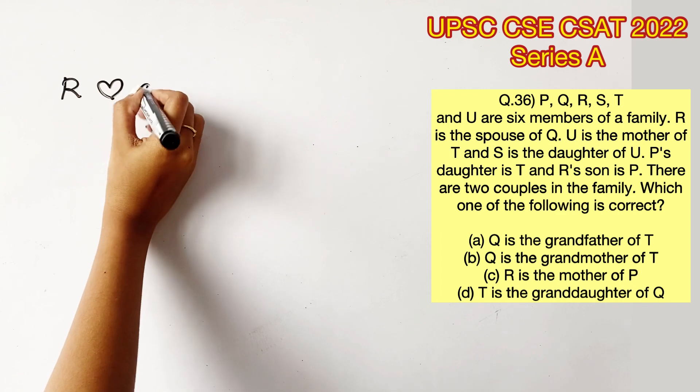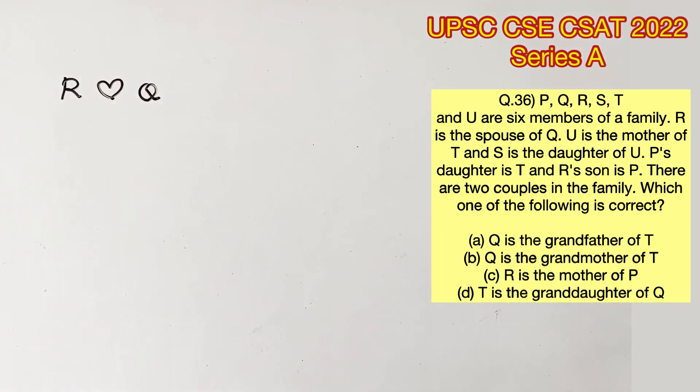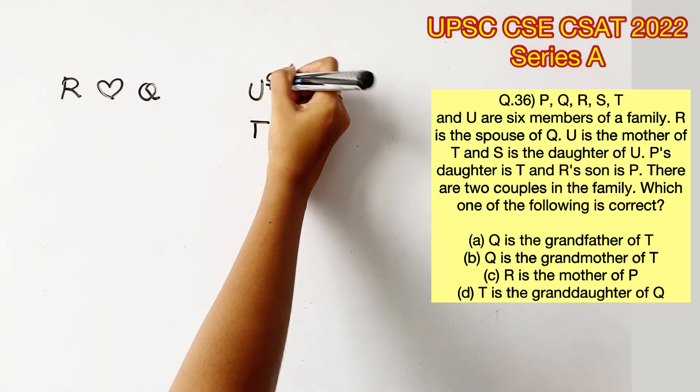The first statement says that R is the spouse of Q, but we don't know what gender R and Q are. The next statement says U is the mother of T. So now we know U is a female. We can mark it here.